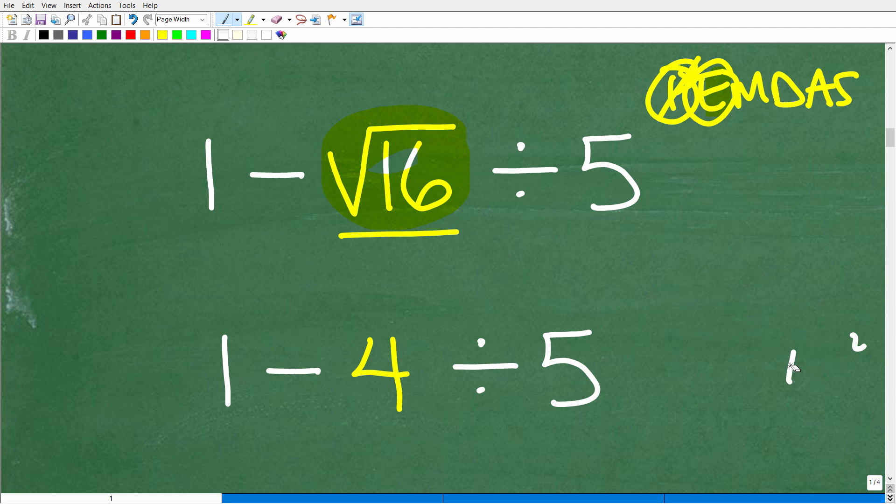Okay. So, now in your brain, you want to be thinking about this problem as not 1 minus the square root of 16 divided by 5. But 1 minus 4 divided by 5. So, you know, you kind of go from here to here. And then just kind of recite this in your brain. Okay. 1 minus 4 divided by 5. 1 minus 4 divided by 5.